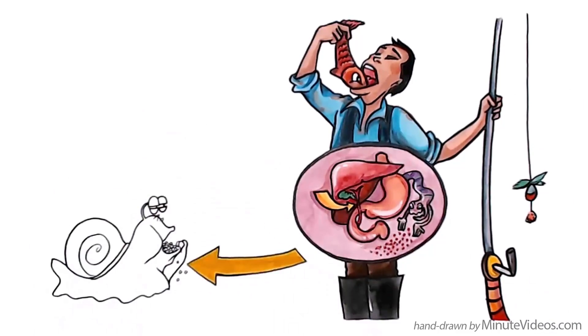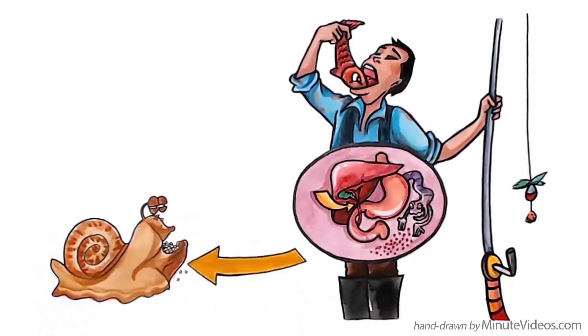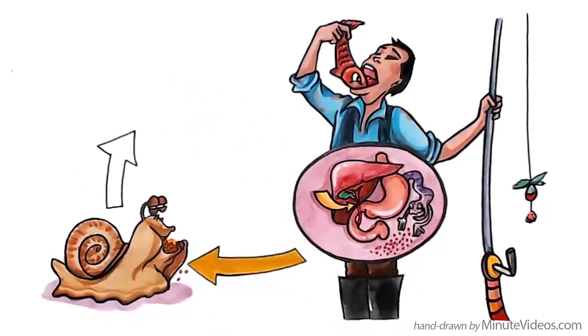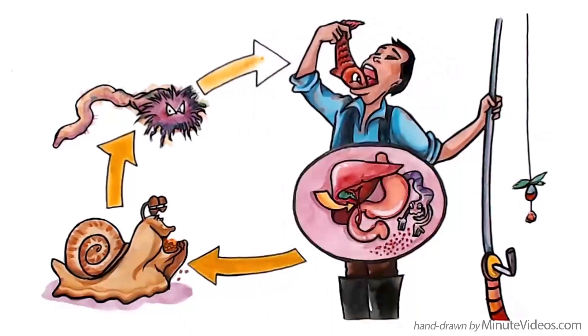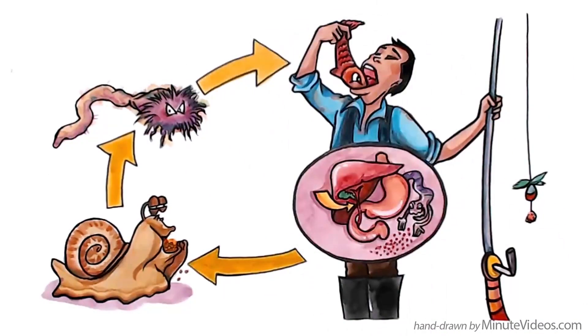The eggs reach freshwater via the stool, where they are eaten by freshwater snails. They hatch and reproduce asexually inside the snail, before leaving it to seek out and invade the muscle tissue of a freshwater fish, where it remains dormant until it's eaten raw.